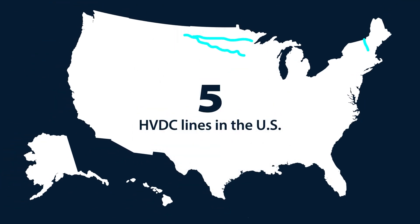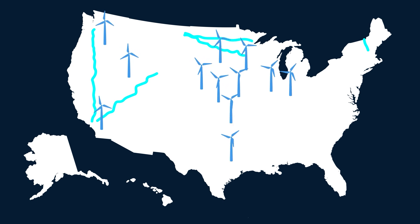Right now, there are only five HVDC lines in the U.S. As more wind energy is deployed in remote locations, we'll most likely have to build some more lines, and HVDC lines are an effective and efficient option.